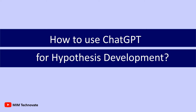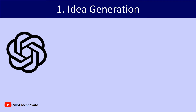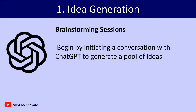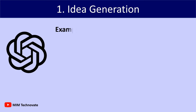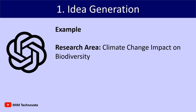How to Use ChatGPT for Hypothesis Development. Number 1: Idea Generation — Brainstorming Sessions. Begin by initiating a conversation with ChatGPT to generate a pool of ideas. Describe your research area and let ChatGPT propose potential hypotheses. The model's ability to understand context and generate diverse responses can spark novel concepts. For example, the research area is climate change impact on biodiversity.